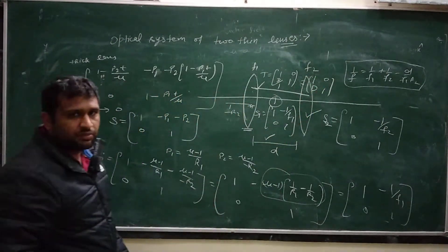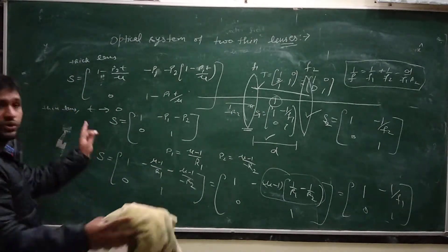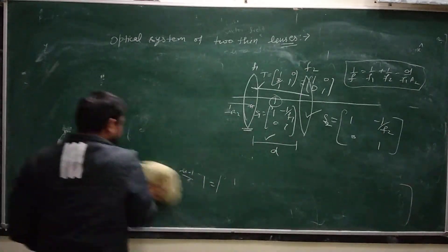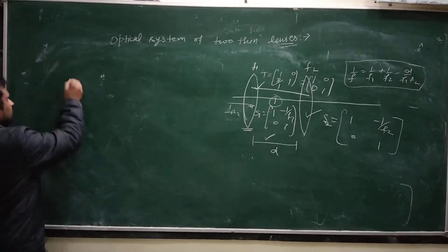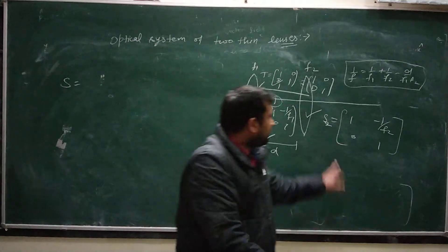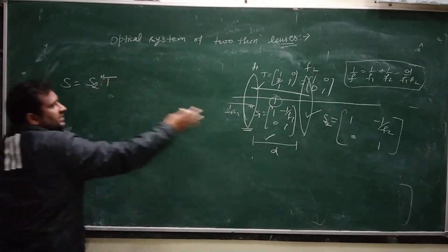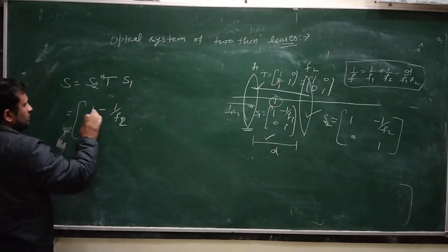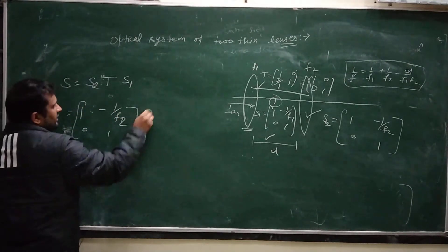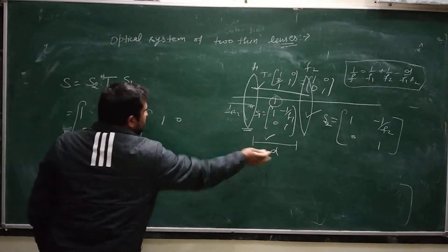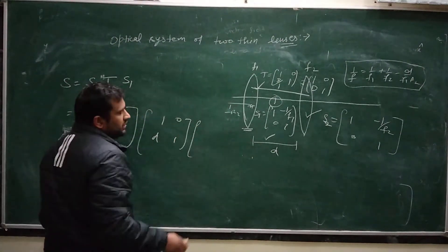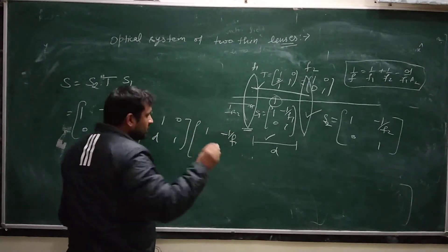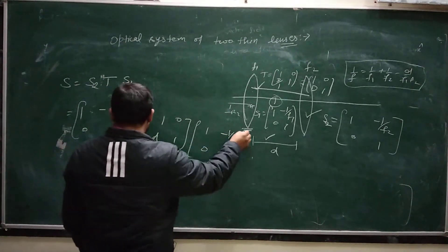Using these three matrices, we can find the system matrix for the whole system. The total system matrix is the product S2 × T × S1, where S2 = [1, 0; −1/f2, 1], the translation matrix T = [1, D; 0, 1], and S1 = [1, 0; −1/f1, 1]. We first multiply S2 × T, then multiply the result by S1.